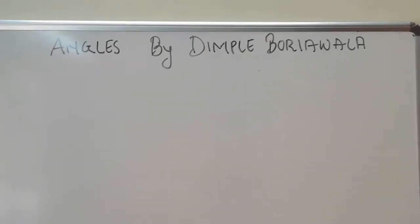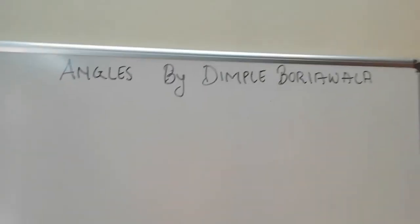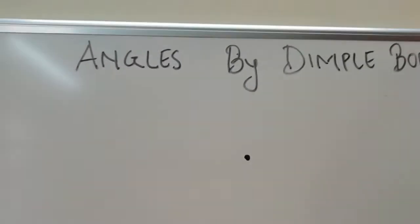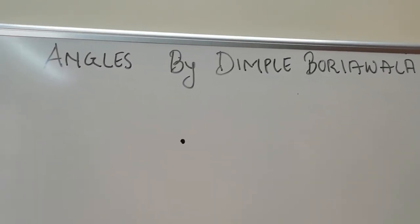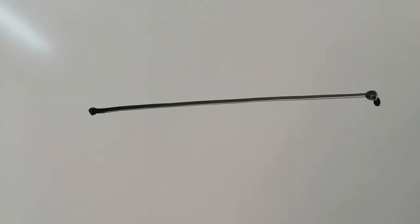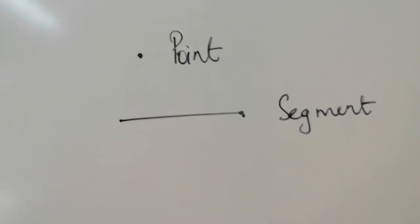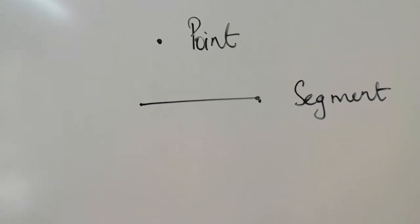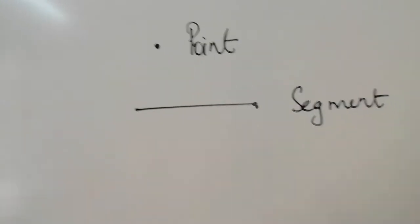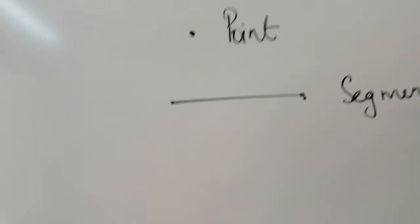In geometry, the first thing we will start with is angles. My first concept is: what is this called? It's called a point. And what is this shape called? It's called a segment. A segment has a starting point and an ending point.